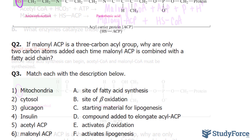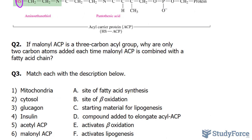Let's move on to question number two. If Malonyl ACP is a three-carbon acyl group, why are only two-carbon atoms added each time Malonyl ACP is combined with a fatty acid chain? In each cycle of fatty acid synthesis, a two-carbon acetyl group from the three-carbon group in Malonyl ACP adds to the growing fatty acid chain, and one carbon forms carbon dioxide. This is why all three carbons are not used in the formation of a fatty acid.